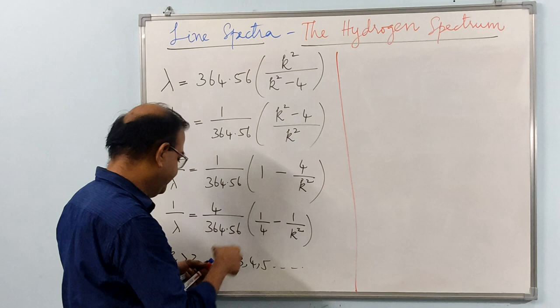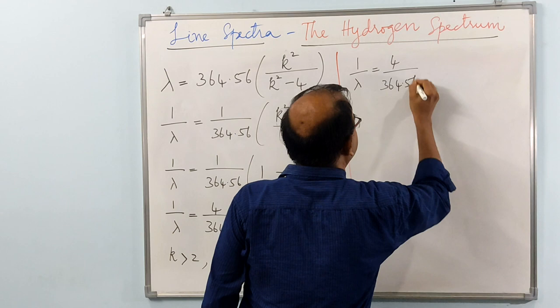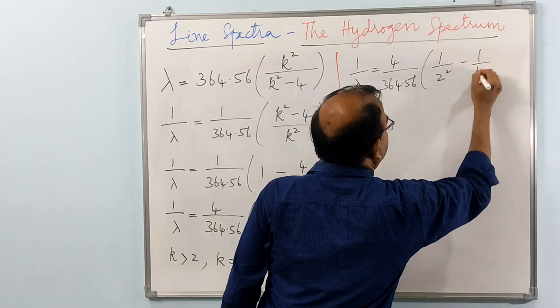That means k could take values 3, 4, 5 and so on. Continuing, 1 over lambda equals 4 over 364.56 times 1 over 2 squared minus 1 over k squared.